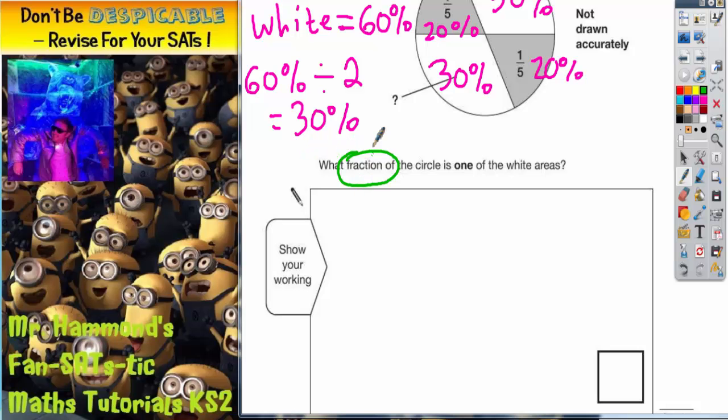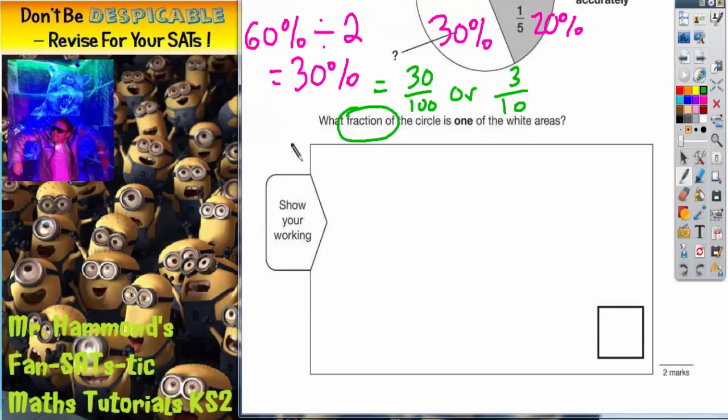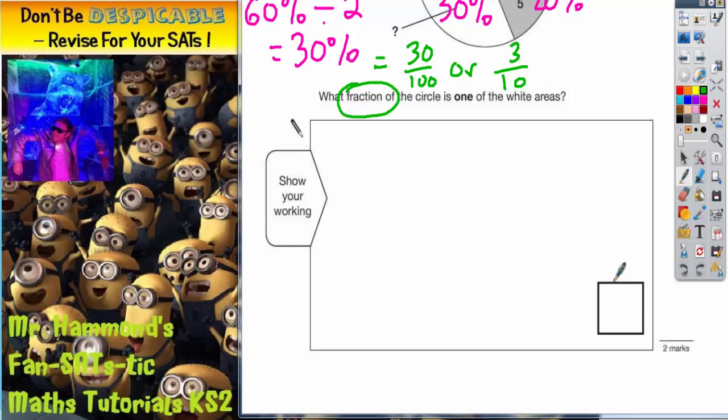So, if we turn 30% into a fraction, we can either write 30 out of 100 or 3 tenths. And they are the two answers that we can accept here. 30 out of 100 or even better, 3 tenths if you've simplified it.